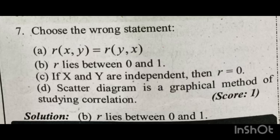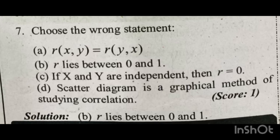Option A states that R of XY is equal to R of YX. In the theory-based video, the correlation between X and Y is the same as the correlation between Y and X — that is a right statement. Option B states that R lies between 0 and 1 — that is the wrong statement. Option C: if X and Y are independent, then R equals 0 — that is a right statement.